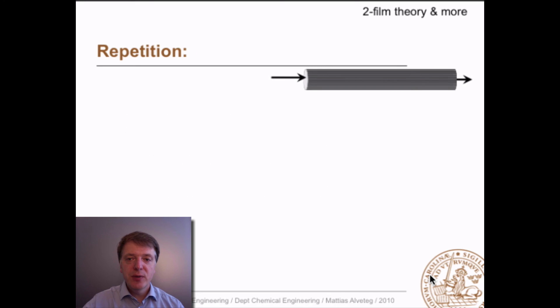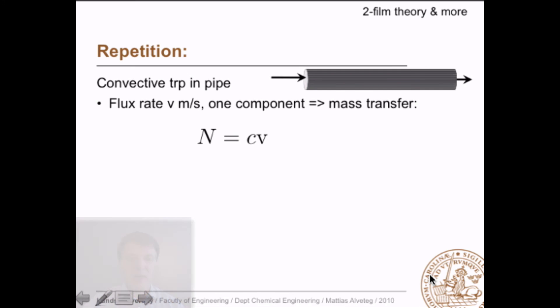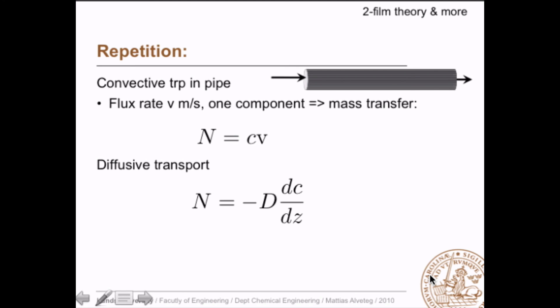To reiterate what we have talked about before: if we have convective transport in a pipe and we know the flux rate, we can calculate the mass transfer as the concentration times the average velocity. And if we have diffusive transport, we can calculate it using Fick's law — the diffusivity times the concentration gradient.